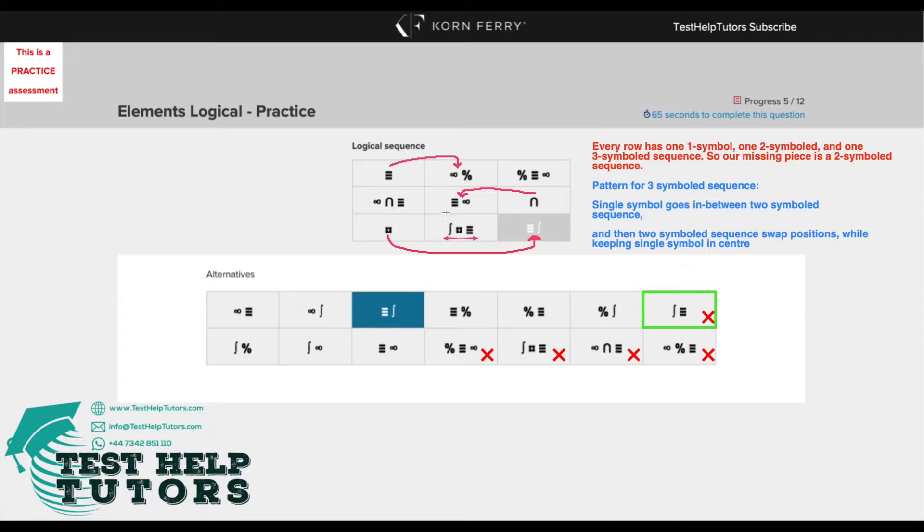Likewise, one symboled, two symboled, three symboled and for our final one, we'll have one symbol here. We've got three symbols here, so we know our missing piece must be two symbols in order for it to fit the pattern above.